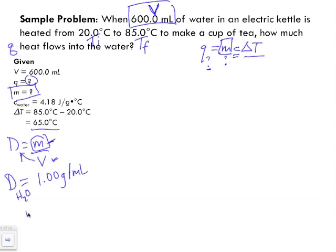What we're doing is we're going to isolate for m. We're going to bring v over to this side of the equation, and we're left with mass equals density multiplied by volume. So we've got 1.00 grams per milliliter multiplied by 600 milliliters.